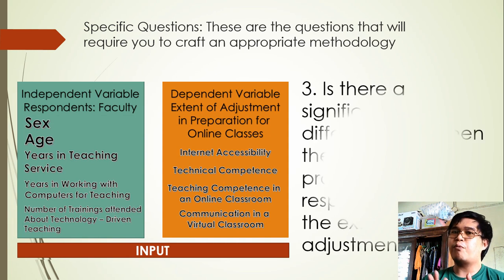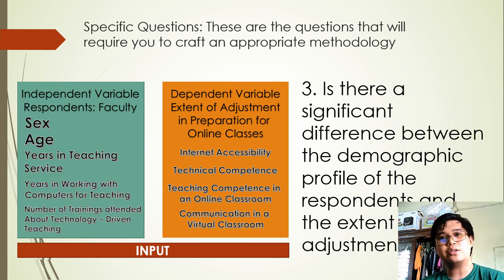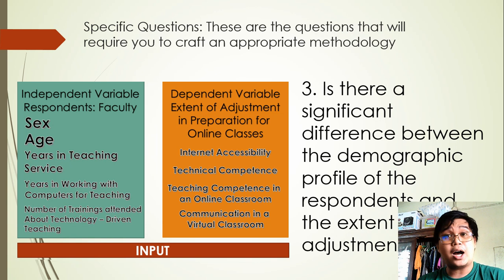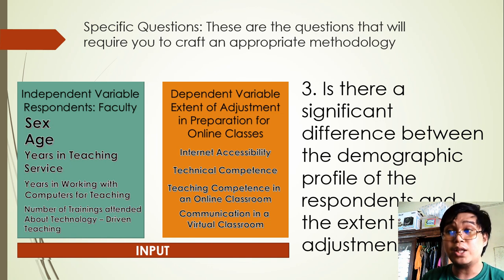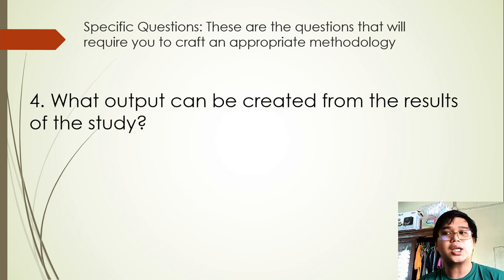Question number three is for statistical clarification between the independent variable and the dependent variable. We consider two options: whether we use the test of significant difference or the test of significant relationship. Always look for the objective of your study and how your variables relate. In this study, I would like to see whether independent variables pose a significant difference in the adjustment of the teachers. So question number three will be: Is there a significant difference between the demographic profile of the respondents and the extent of adjustment? Question number four will be the output question: What output can be created from the results of the study?